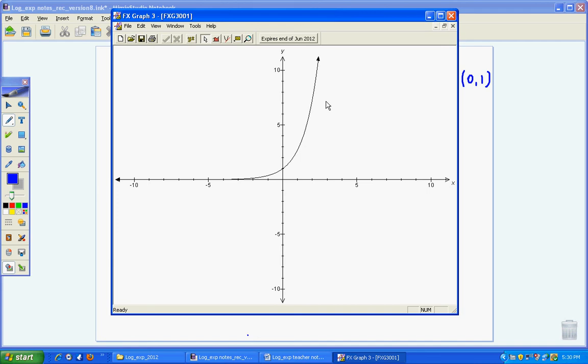This is why e is important. The derivative of e to the x is the same as e to the x, because the natural log of e, as we saw before, gave us 1. So the derivative of e to the x would be 1 times e to the power of x.